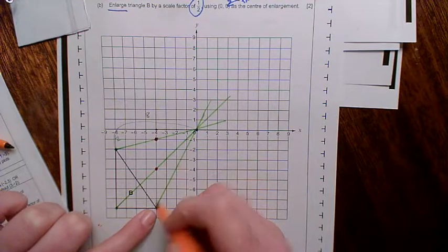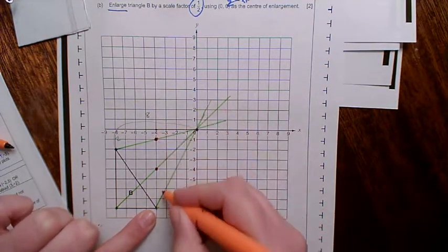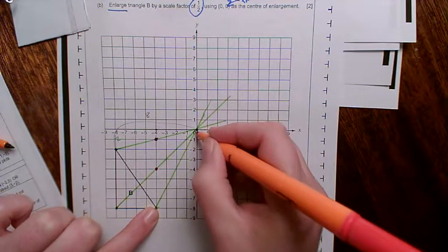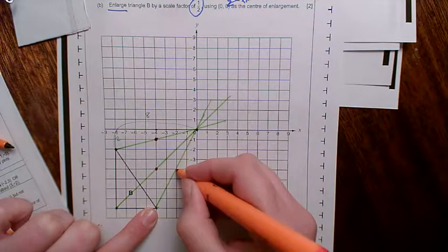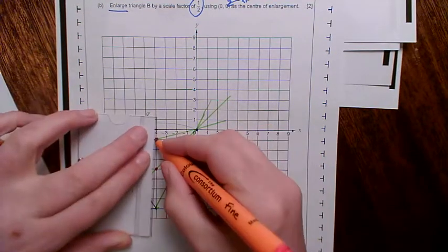For the third corner, then, from 0, you go across 4, and down 8. So, I need to half that, and go across 2, down 4. And again, I'm elated to see it fall on top of the guideline.